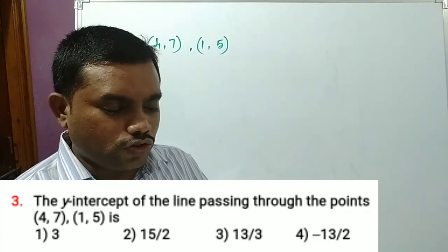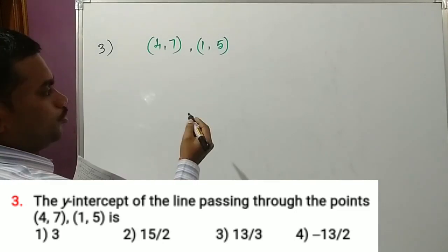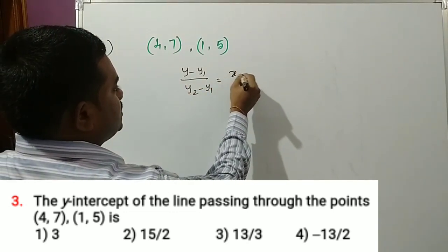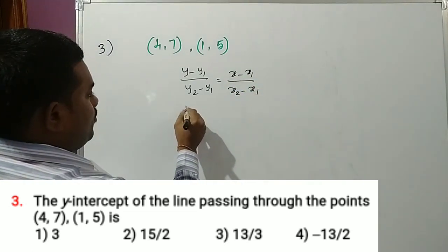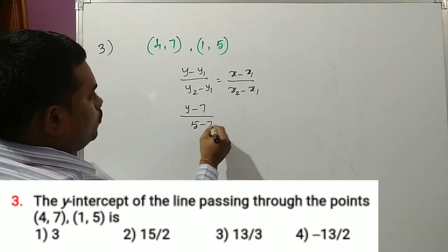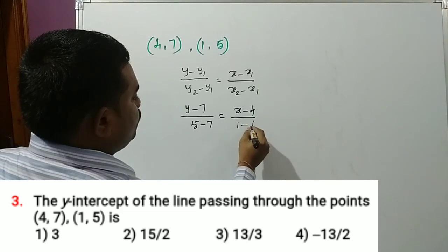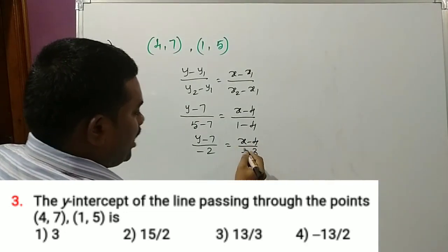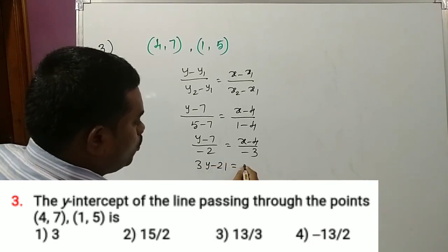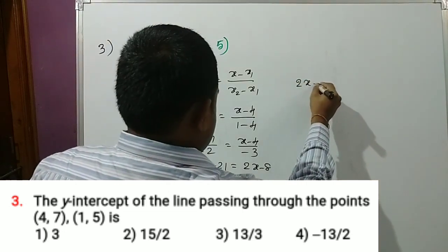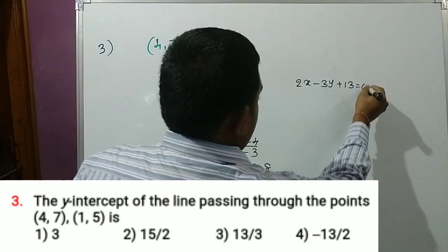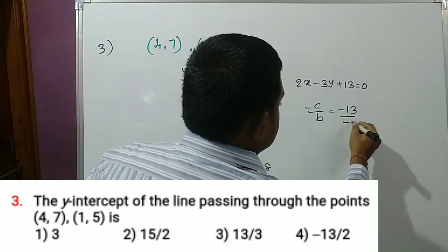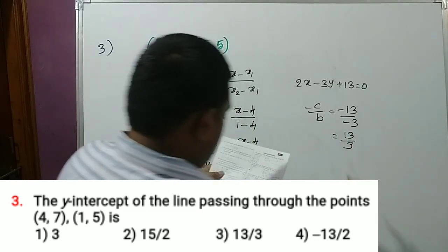Question 3: The y-intercept of the line passing through points (4, 7) and (1, 5). Using two-point form: (y minus 7)/(5 minus 7) equals (x minus 4)/(1 minus 4), so (y minus 7)/(minus 2) equals (x minus 4)/(minus 3). This gives 3y minus 21 equals 2x minus 8, hence 2x minus 3y plus 13 equals 0. The y-intercept equals minus c/b equals minus 13/(minus 3) equals 13/3. Option 3 is the correct answer.